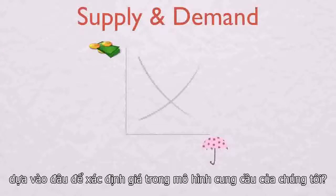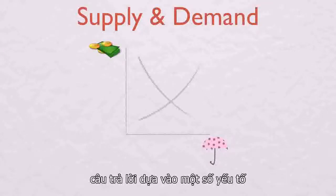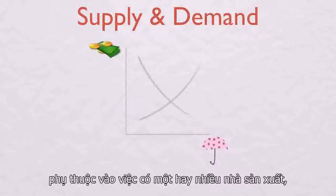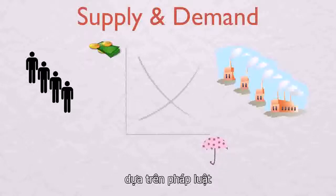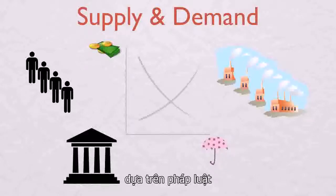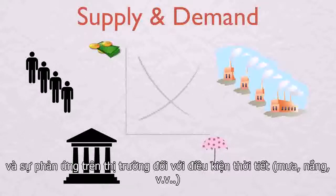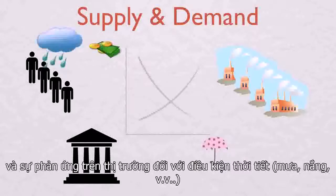Where would we expect to see prices in our supply and demand model? The answer depends on many things. It depends on whether there is one producer or many, on whether there is one buyer or many, on what the laws are, and on how quickly the market can react to a sudden rainstorm.